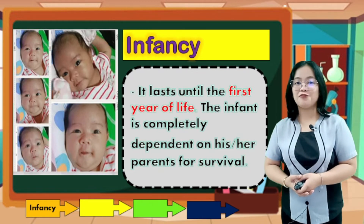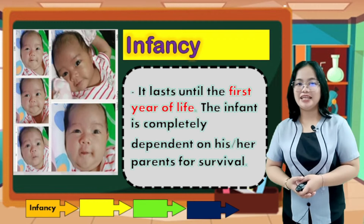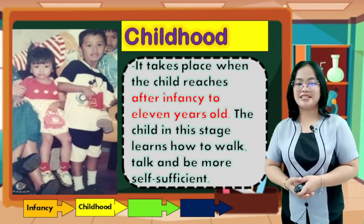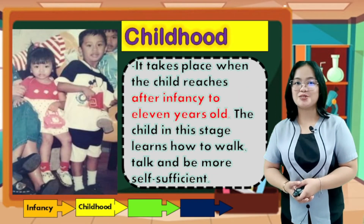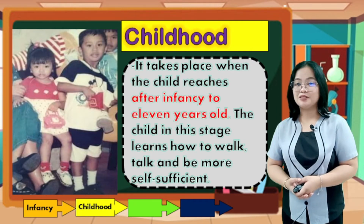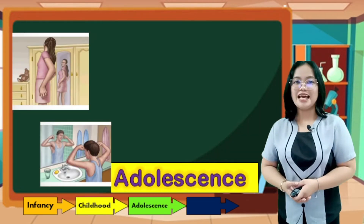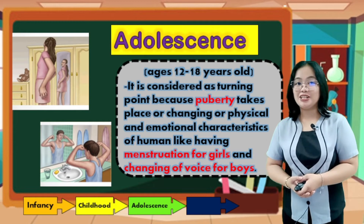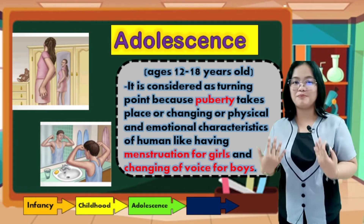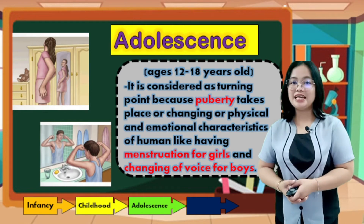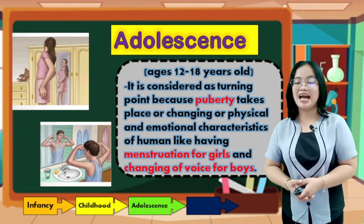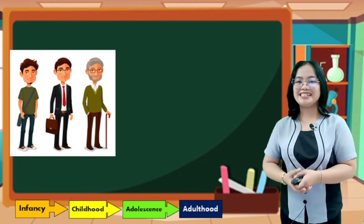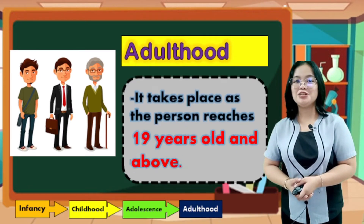Infancy lasts until the first year of life. The infant is completely dependent on his or her parents for survival. Next is the childhood stage, from 3 to 11 years old, where the child learns how to walk, talk, and be more self-sufficient. Next is adolescence, from 12 to 18 years old, which is considered a turning point because puberty takes place — changing physical and emotional characteristics, like menstruation for girls and voice changes for boys. The last stage is adulthood, from 19 years old and above.